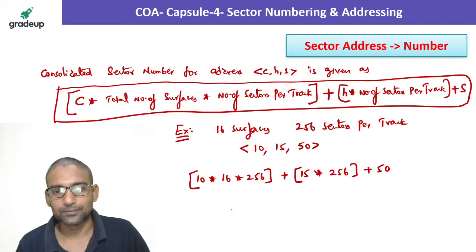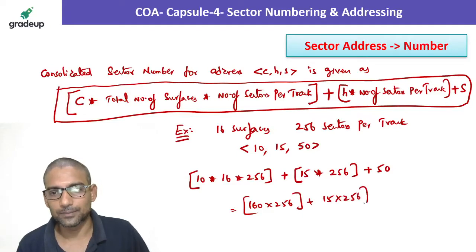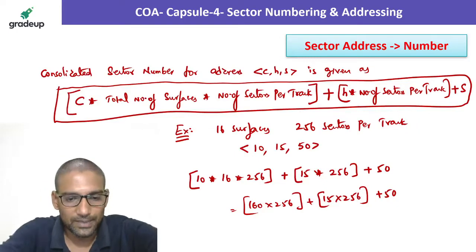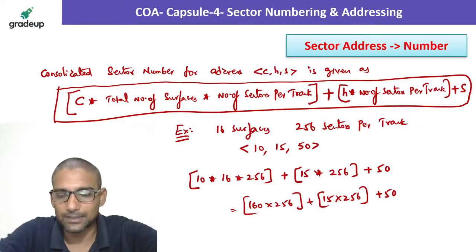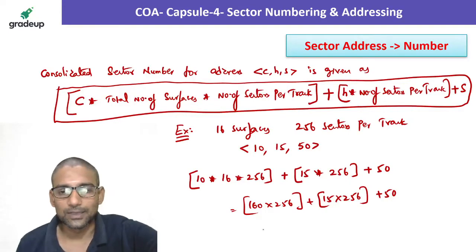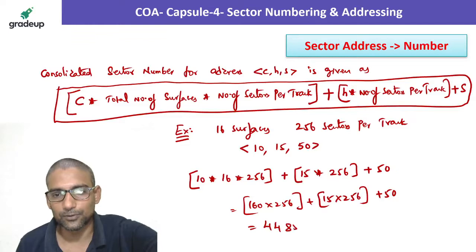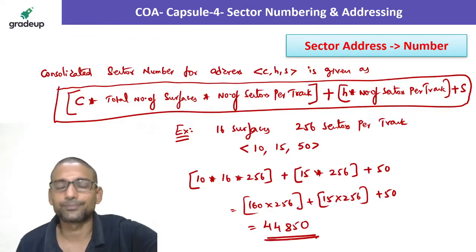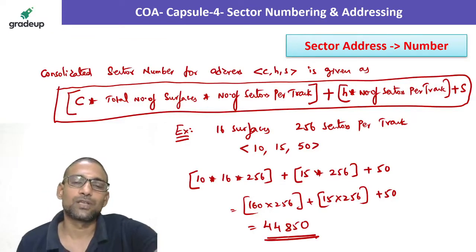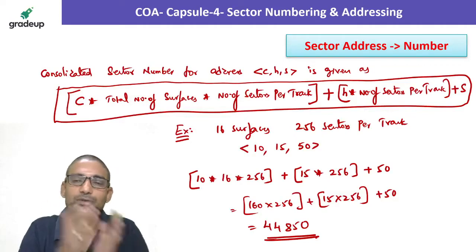Let me use my calculator. This would be 175 into 256, that is 44800 plus 50. You will get the consolidated sector number as 44850. This is how you will convert sector address to sector number.